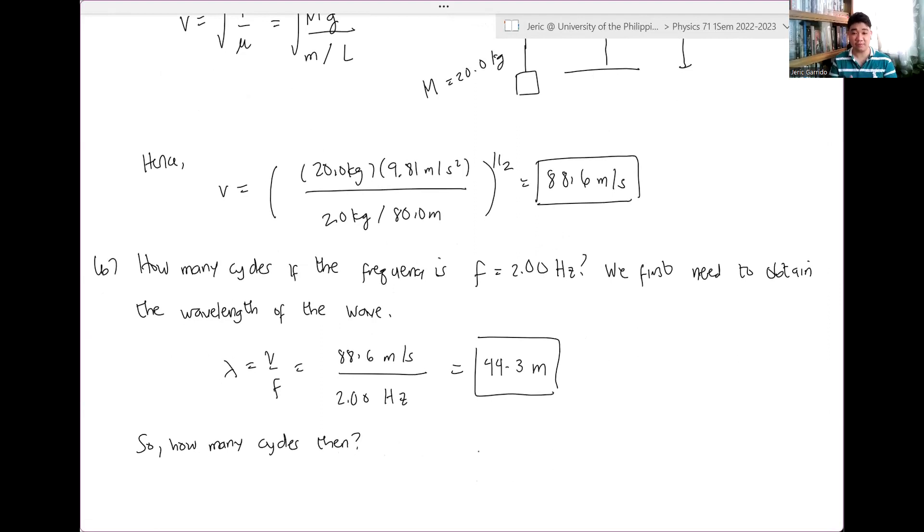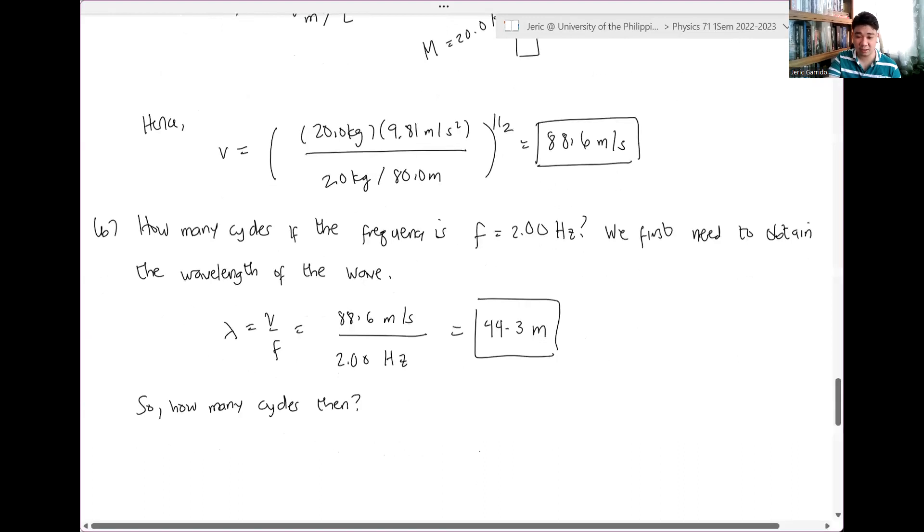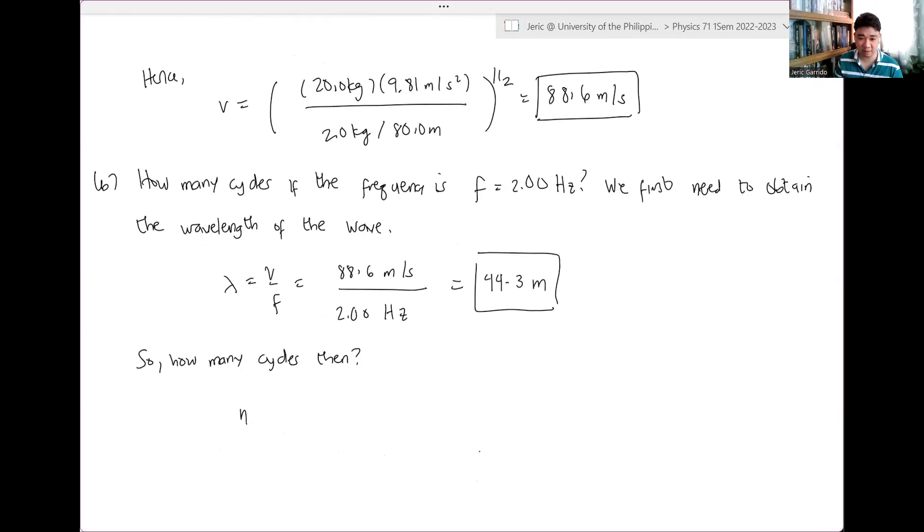Ganong karaming cycles. If one wavelength is 44.3 meters, then the total number of cycles, the number of cycles, is just the total length of the rope, which is capital L, divided by the total number of wavelengths, lambda. So, hinati mo ngayon yung buong stretch ng rope into different cycles. And from there, this is just equal to 80.0 meters divided by 44.3 meters. And the answer is, I believe, 1.81 cycles.